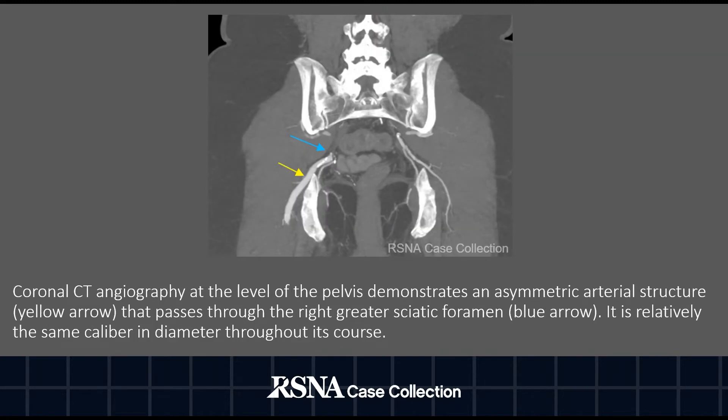Coronal CT angiography at the level of the pelvis demonstrates an asymmetric arterial structure labeled with the yellow arrow. It passes through the right greater sciatic foramen as demonstrated by the blue arrow, and is relatively the same caliber and diameter throughout its course.